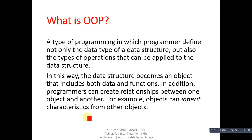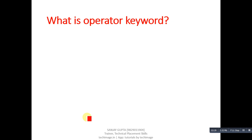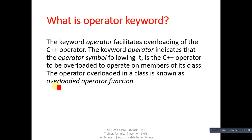In addition, programmers can create relationships between one object and another — for example, objects can inherit characteristics from other objects. Next question: what is the operator keyword? The keyword operator facilitates overloading of C++ operators. It indicates that the operator symbol following it is the C++ operator to be overloaded to operate on members of its class.